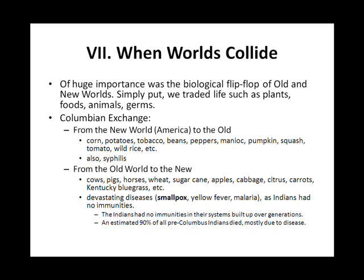From the Old World to the New came cows, pigs, horses, wheat, sugarcane, apples, cabbage, citrus, carrots, Kentucky bluegrass, and so on. Also devastating diseases such as smallpox, yellow fever, and malaria. The Indians had no immunities in their system built up over generations. An estimated 90% of all pre-Columbus Indians died, mostly due to disease.